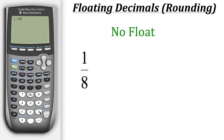Let's do one divided by eight and then hit enter. This gives us the exact decimal answer for the division, which is 0.125. That's what happens when float is turned off — it goes to however many decimal places it needs to get the answer.